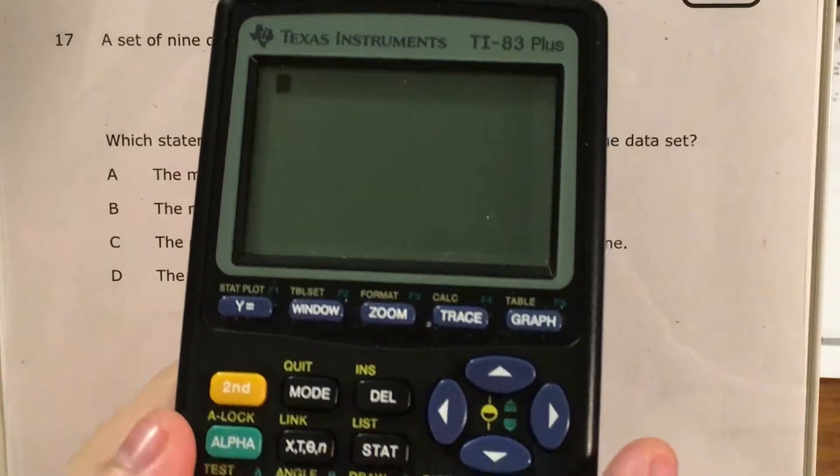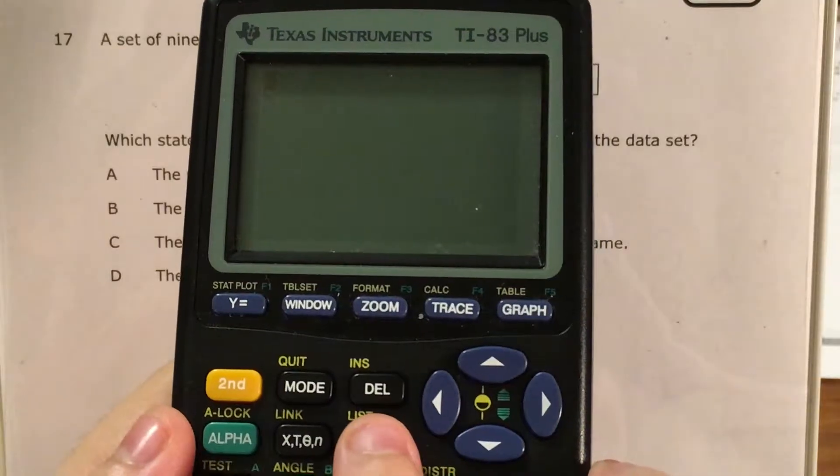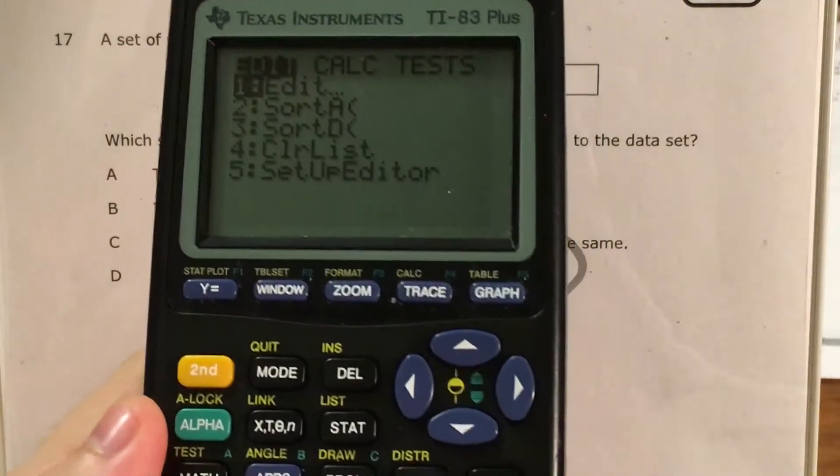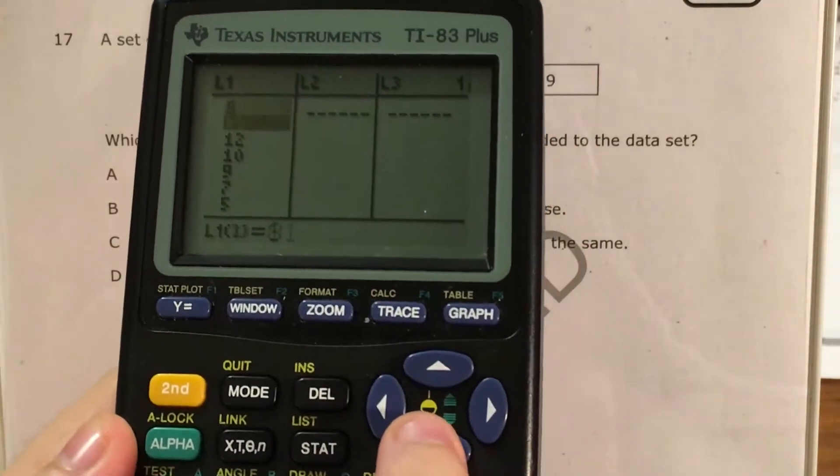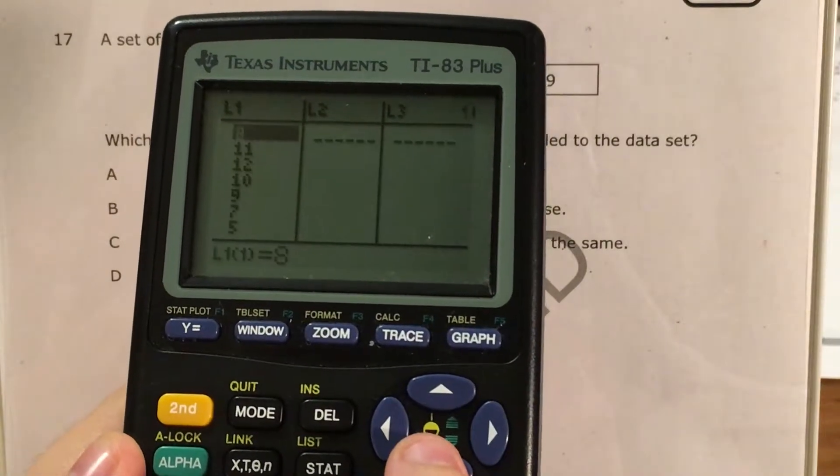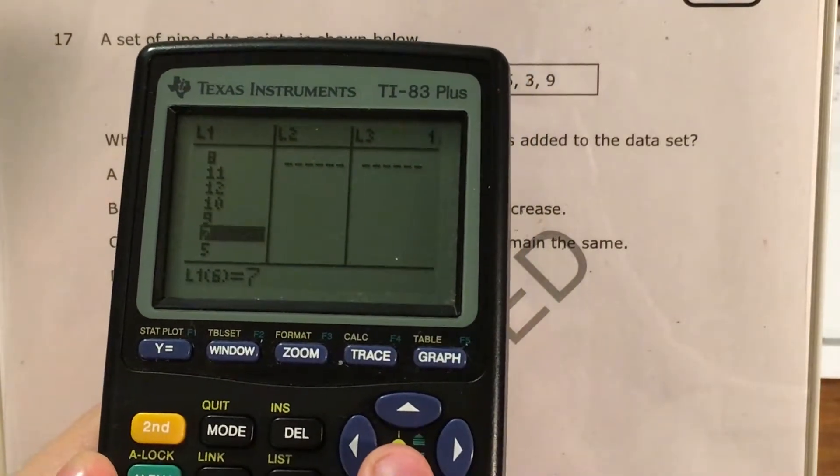So here's my calculator. If I want to find that data, I press the stat button, and I go to edit. I've actually typed all 9 of these numbers into list 1 already, but you would go ahead and type them, one for each row.